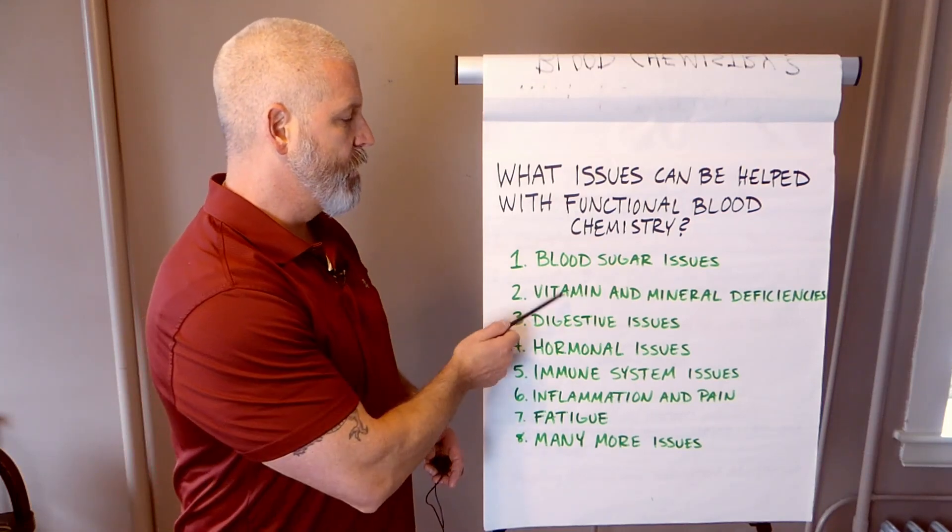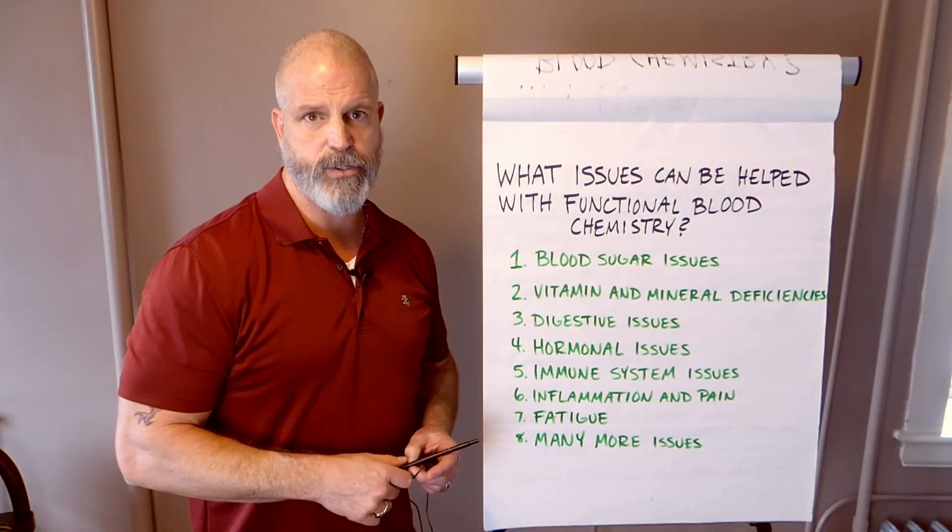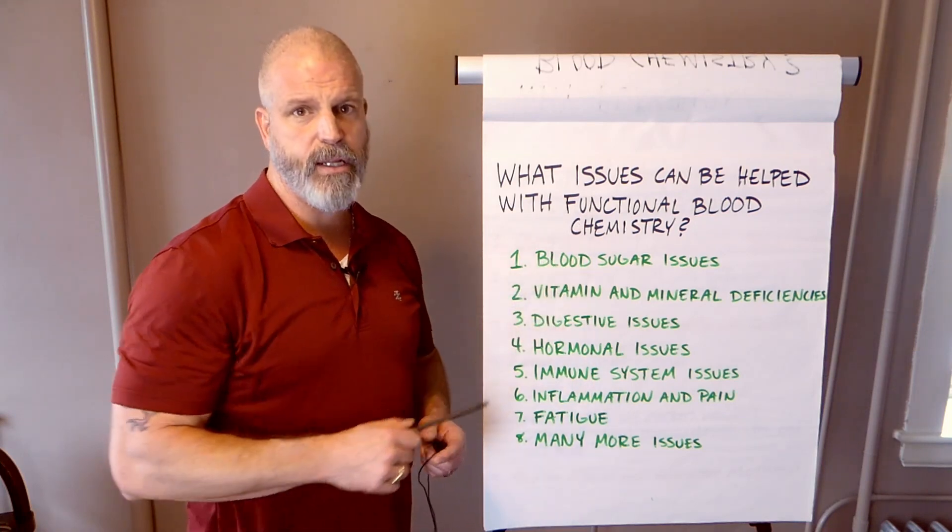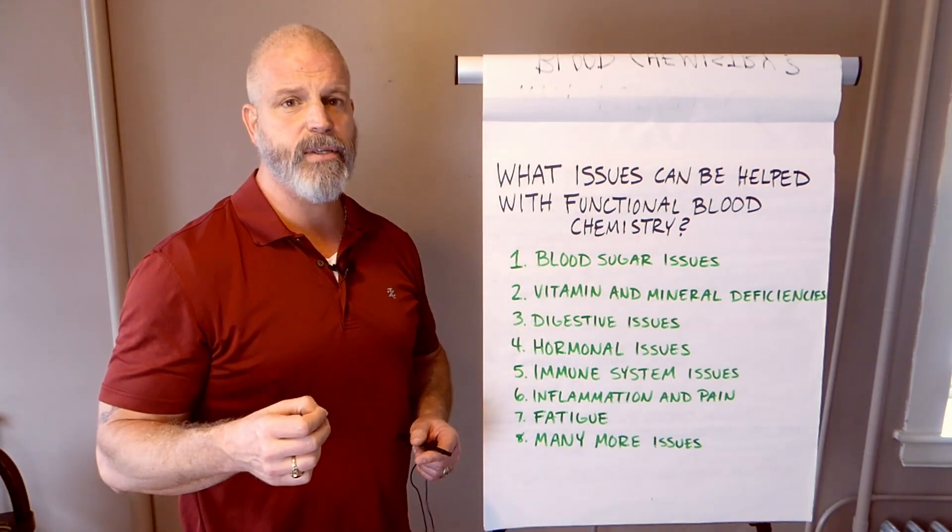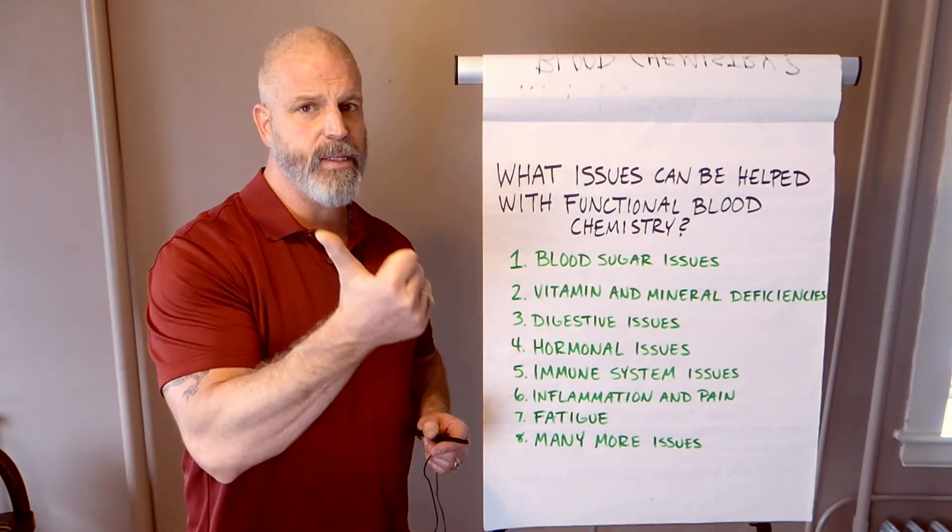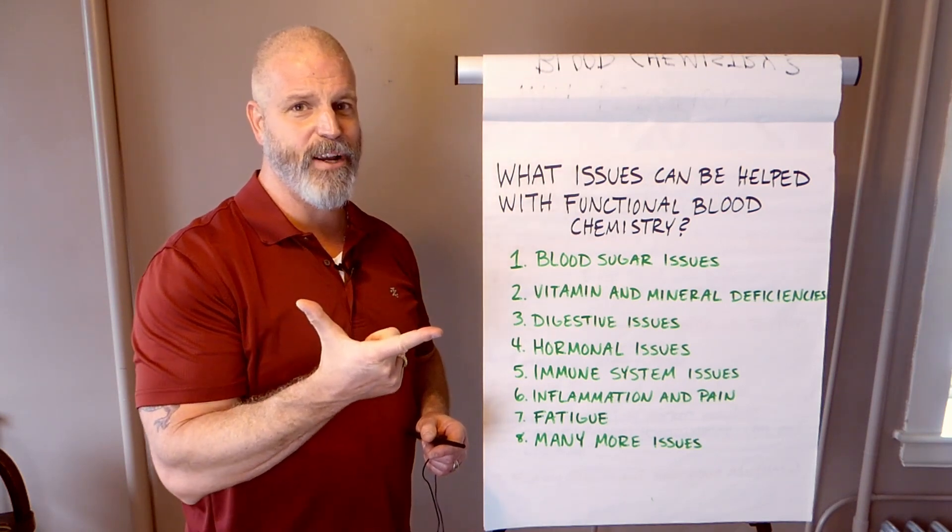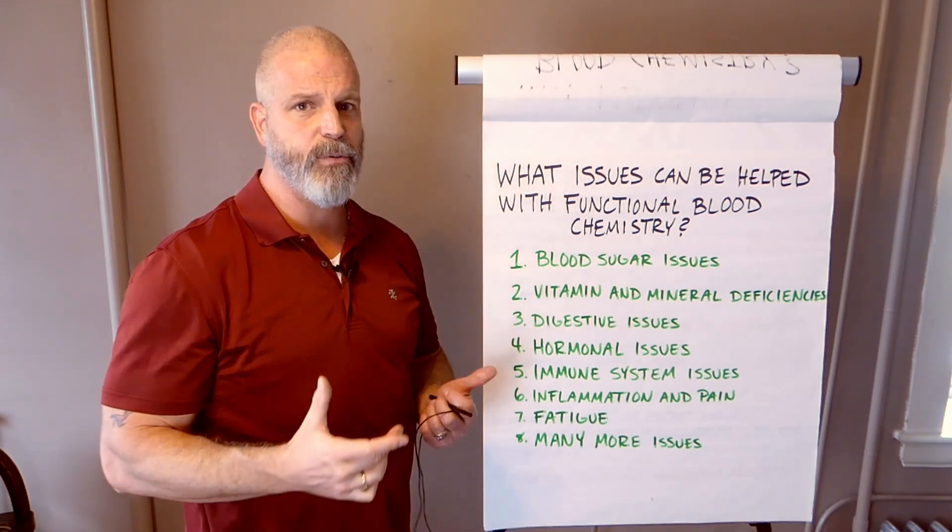The next thing is you can see a lot of vitamin and mineral deficiencies when you use functional blood chemistry. The common ones that we see are, of course, vitamin D and zinc. Those are the ones in the press these days. But also B1, B6, B9, B12,